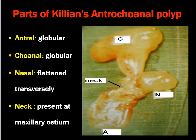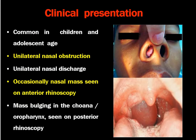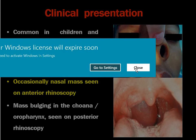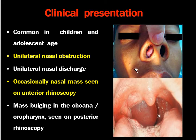What are the parts of the antrochoanal polyp? The parts are: the antral part which is a globular part, the nasal part which is also globular, and the neck which is present at the maxillary ostium. The nasal part is flattened transversely. In the antrochoanal polyp the nasal part is small. Clinical presentation: they are commonly found in children and adolescents, they are a unilateral condition leading to unilateral obstruction, and there might be unilateral discharge. Occasionally a nasal mass can be seen on anterior rhinoscopy.